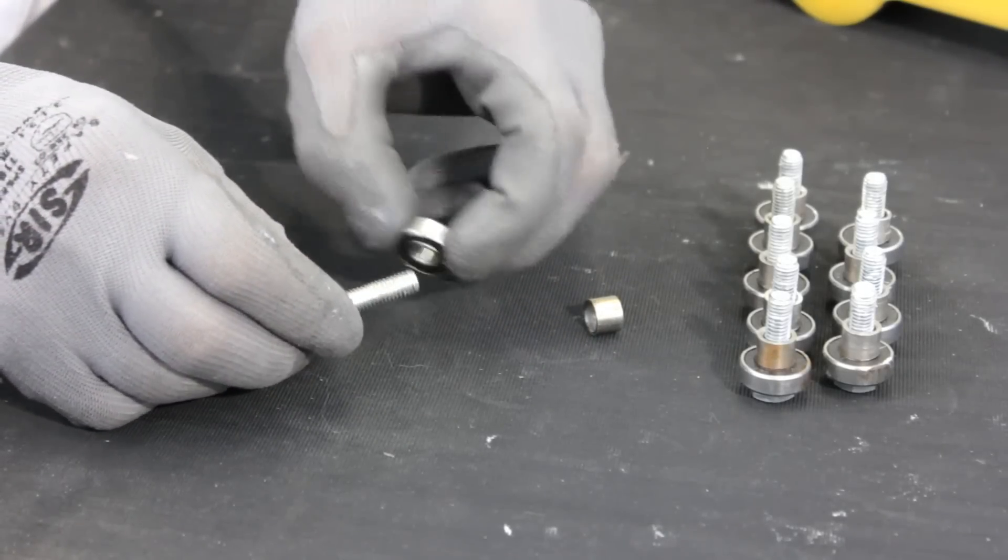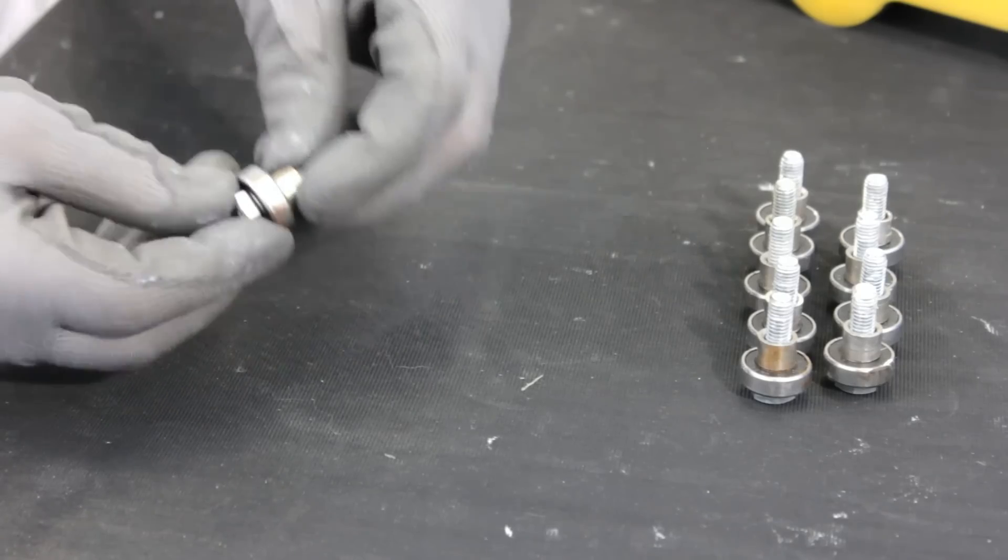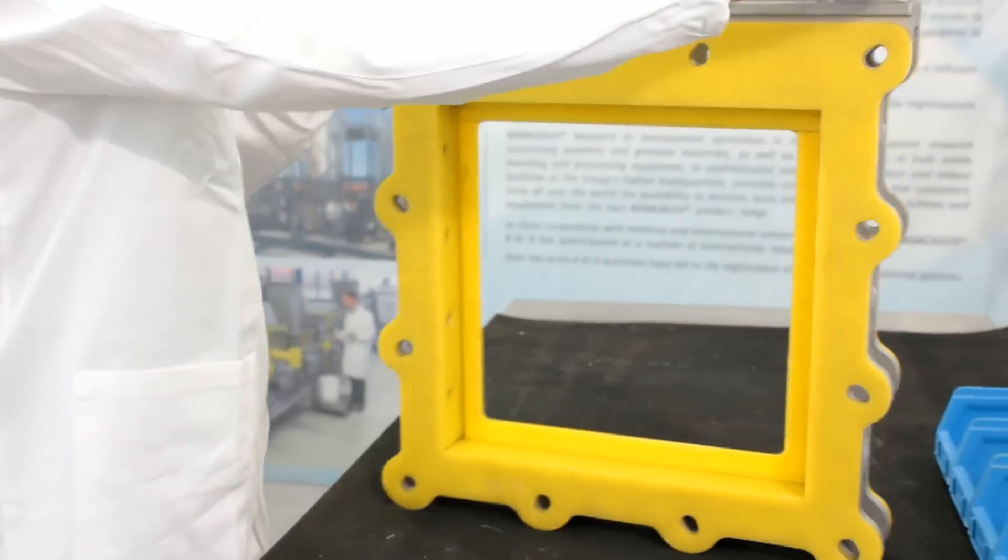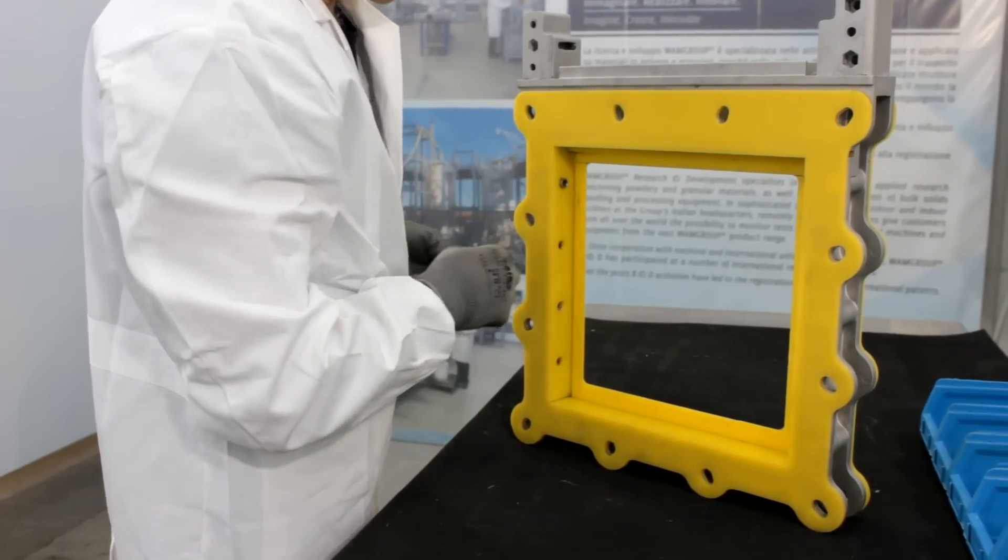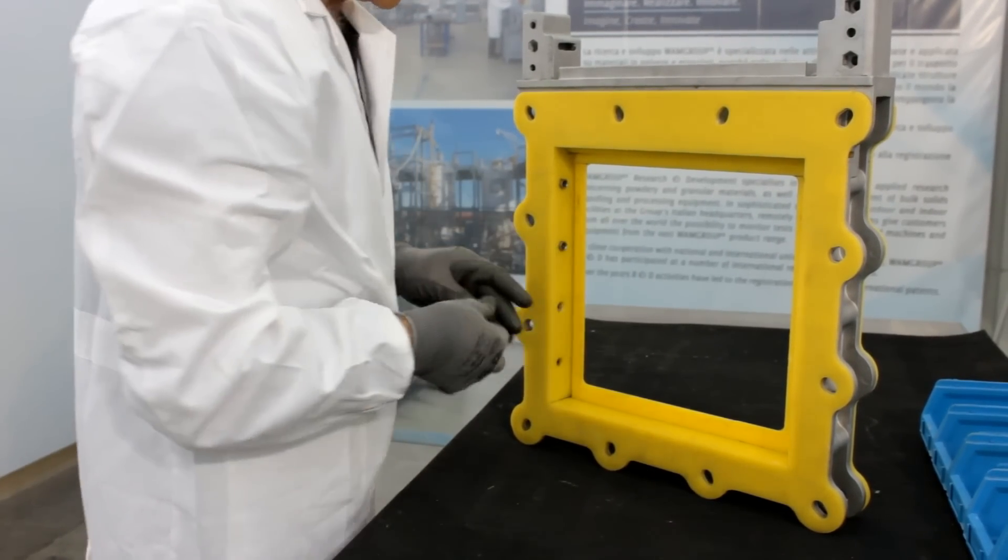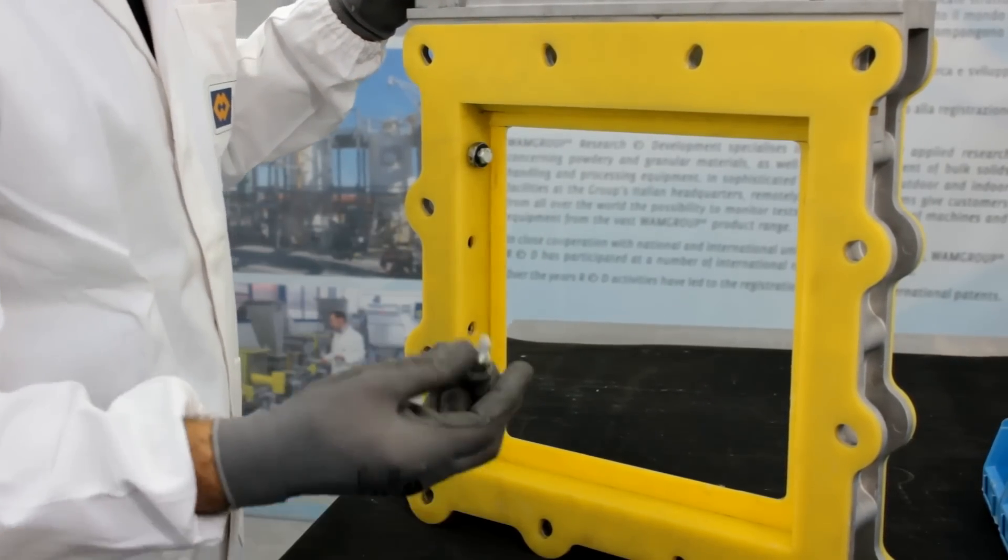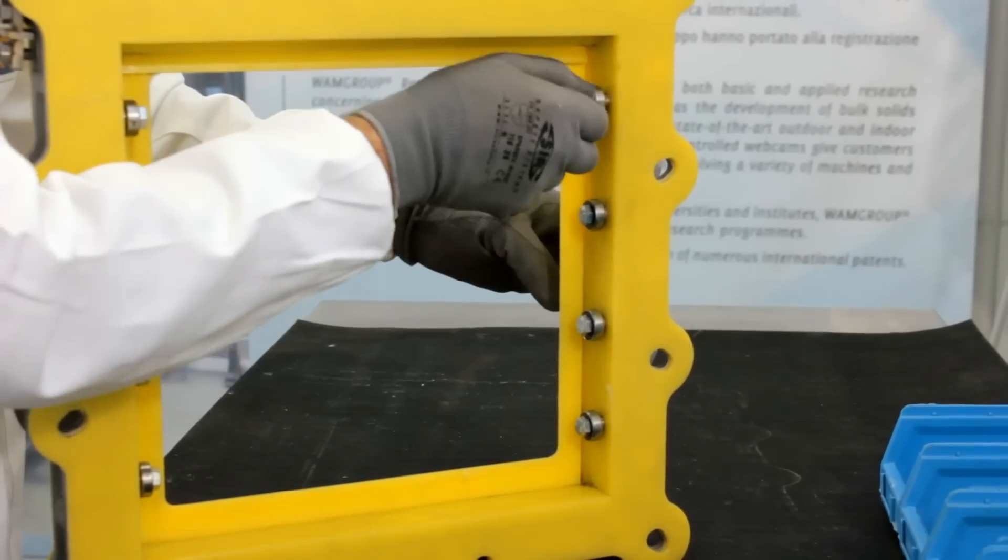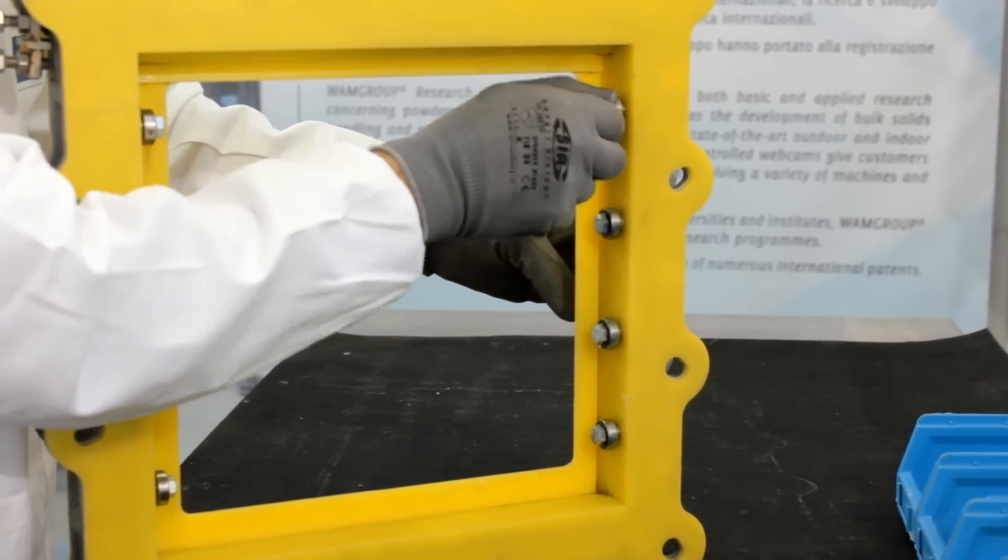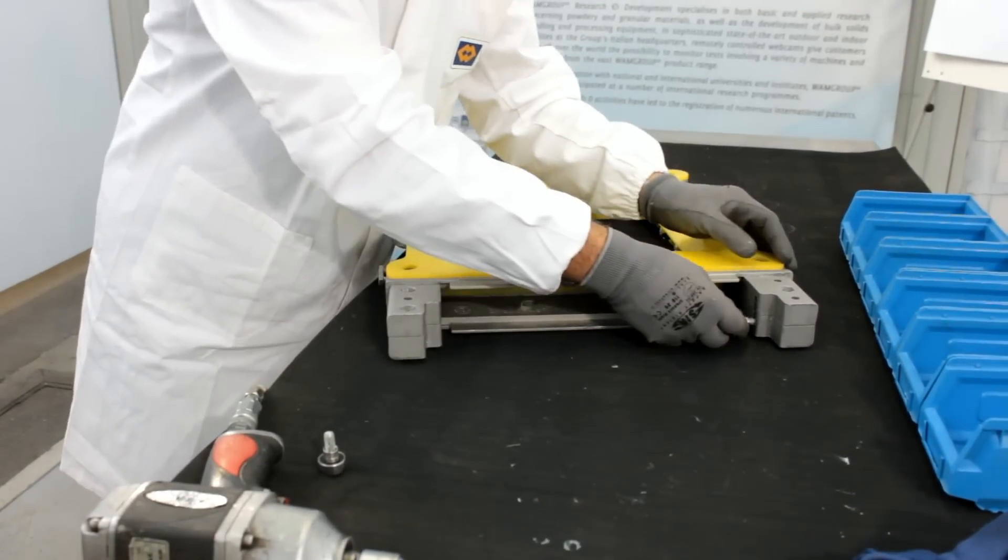Fit the bearings and bushes on the screws. Place the valve vertically and fit loosely the screws, bearings and bushes to the seal. Seat the valve down and fit loosely the external screws, bearings and bushes.